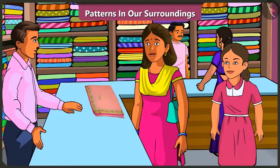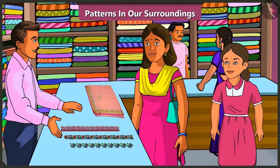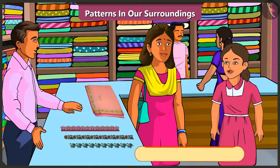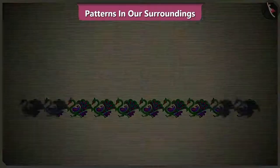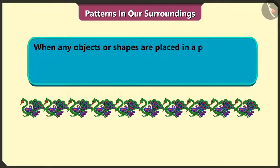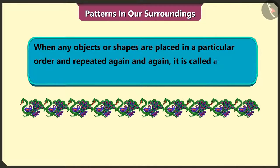Brother, show me a good border or lace which can be stitched to the saree. These are the options available. You can pick any pattern that you like from these options. Mummy, what is a pattern? When any object or shapes are placed in a particular order and repeated again and again, it is called a pattern.